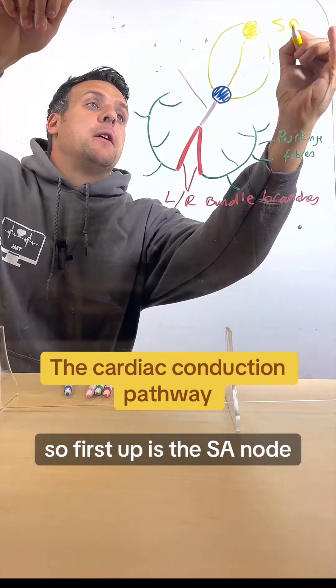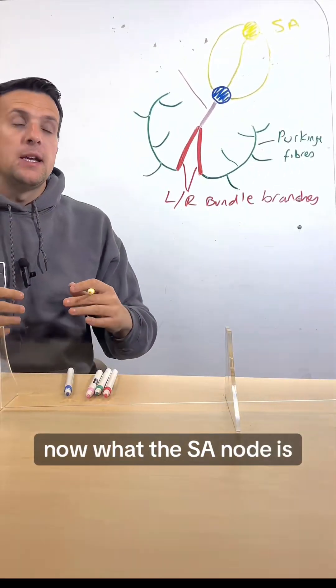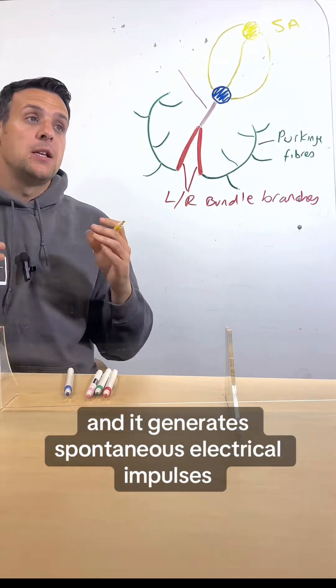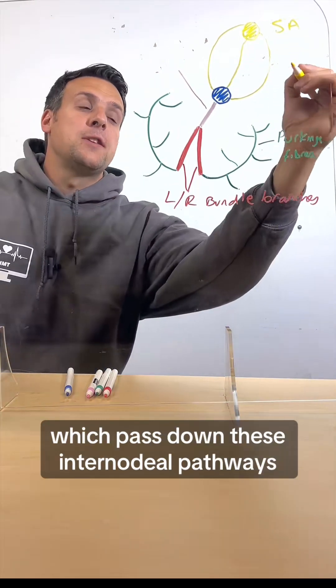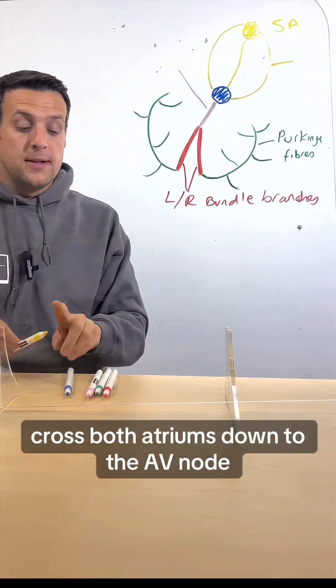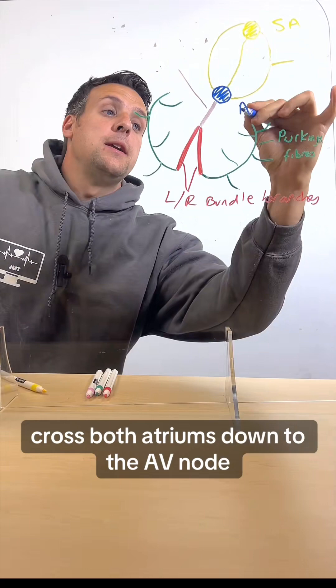First up is the SA node. The SA node is the heart's natural pacemaker and it generates spontaneous electrical impulses which pass down these internodal pathways across both atriums down to the AV node.